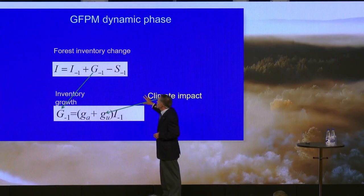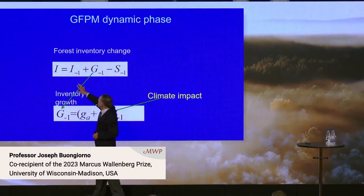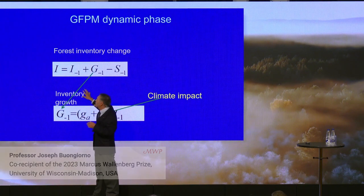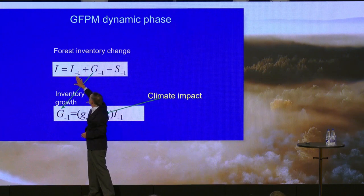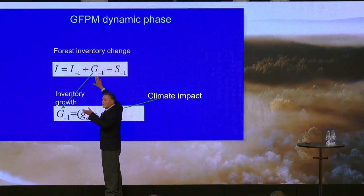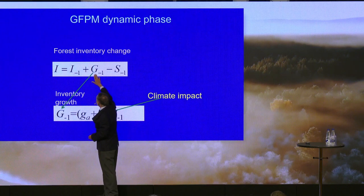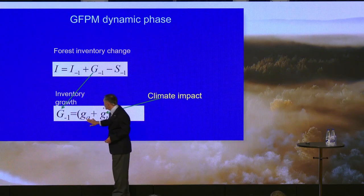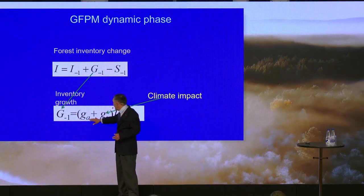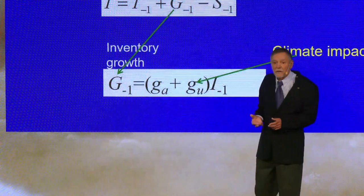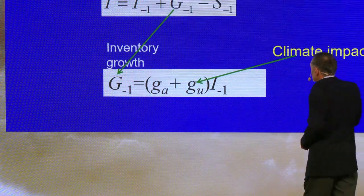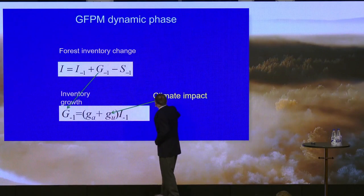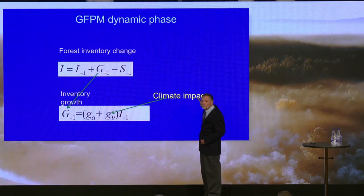For our purpose, the main equation in the dynamic phase establishes the change in forest stock: the inventory in a particular year must equal the inventory in the last year, plus the growth of that inventory, minus the harvest. The growth must be a function of the change in forest area and the change in the rate of growth of trees on the area that remains. It is in that parameter that we can introduce the effect of climate change.